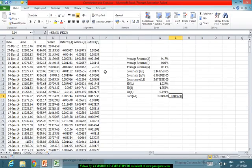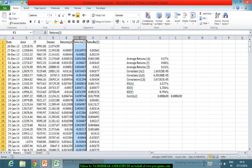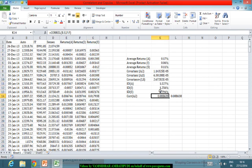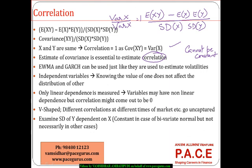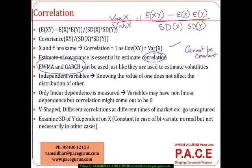An important aspect is that correlation cannot be constant — it may keep increasing or decreasing over time. If I take the whole data in one go, I get a single correlation of around 0.08 for the entire period, but I don't want that. I want the changing correlation on a daily basis. That is where, just like we estimate variances using the exponential weighted moving average model or the GARCH model, we will use similar models to estimate the correlation and covariances as well.